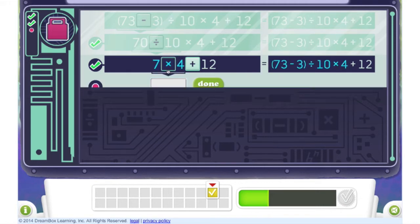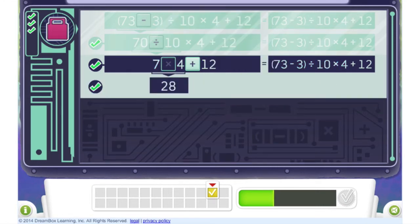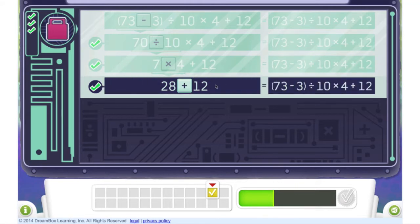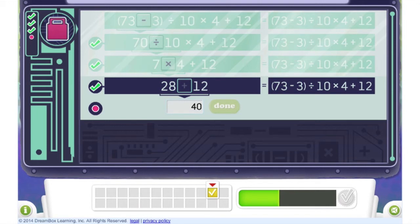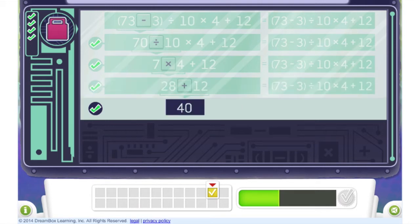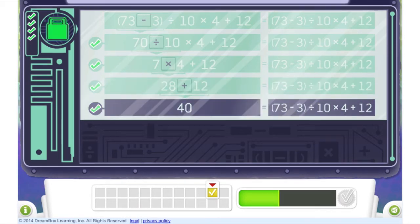The student could always choose to mentally solve more than one operation at a time. But she chooses one step at a time in the correct order of operations. As she solves the problem, the control panel continues to expand until the student solves the entire problem and opens this lock.